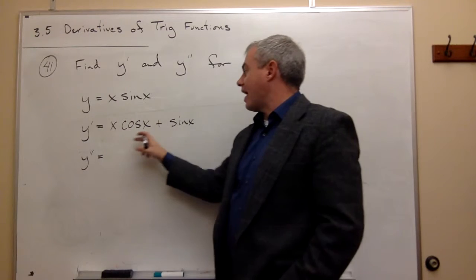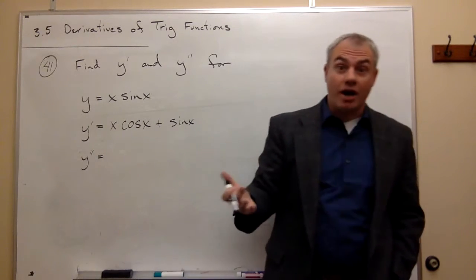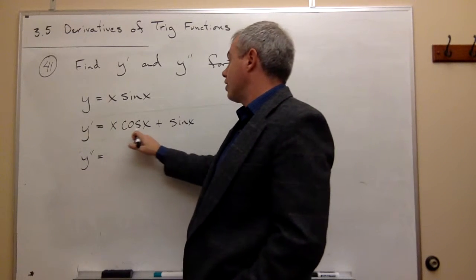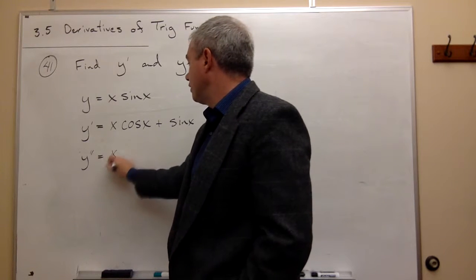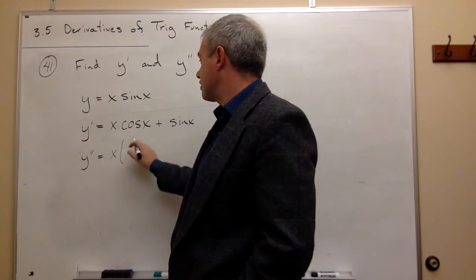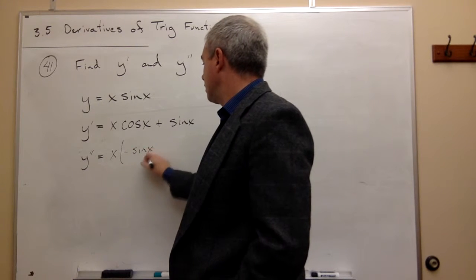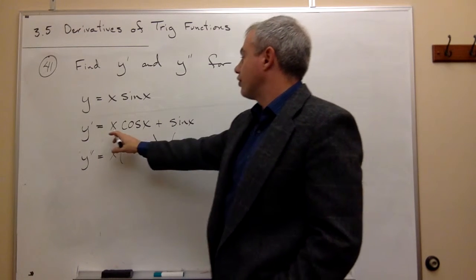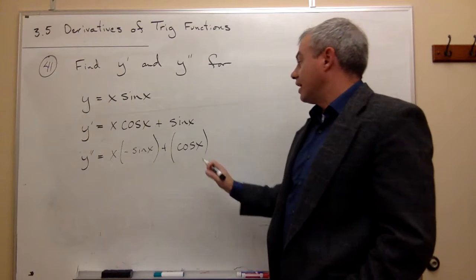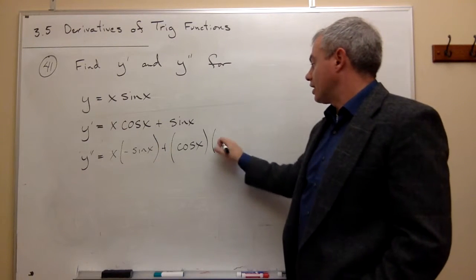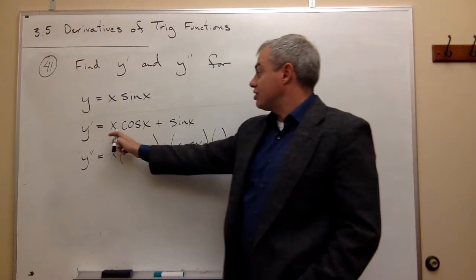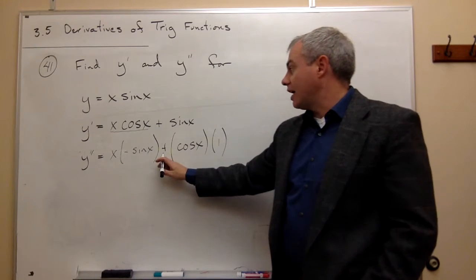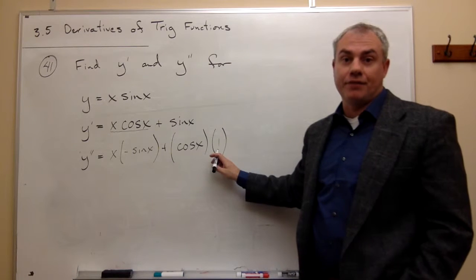When I take the derivative of x cosine x, I see that is a product, so I need to use the product rule again. I take the first guy and leave it alone — x — times the derivative of cosine of x, which is negative sine x, plus the second guy left alone — cosine of x — times the derivative of the first, which is x. And the derivative of x is just one.